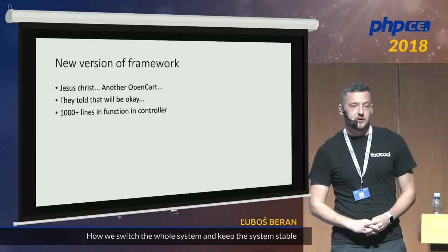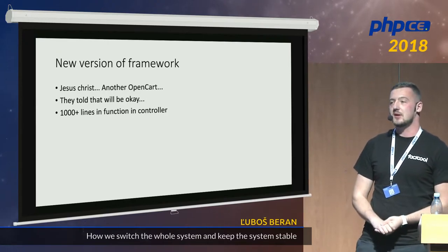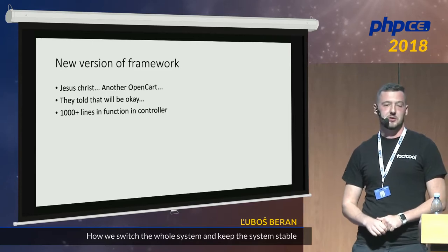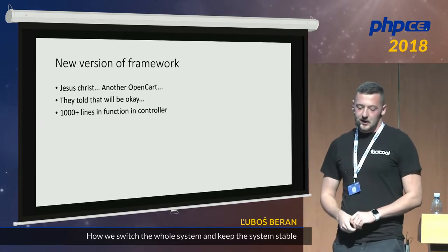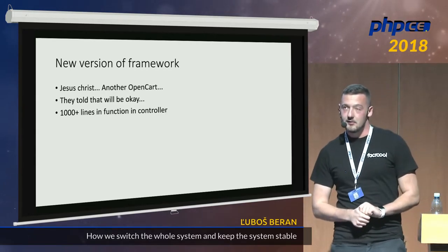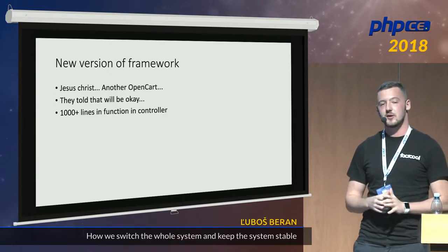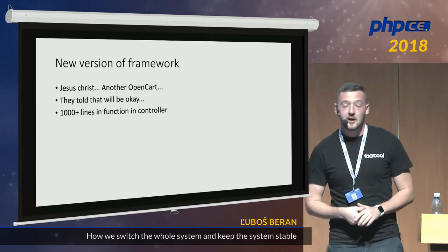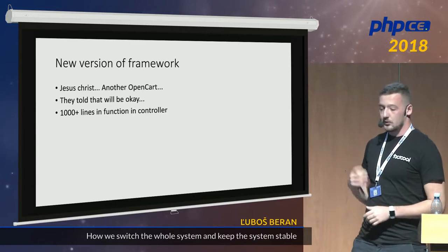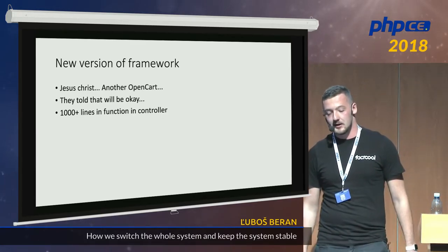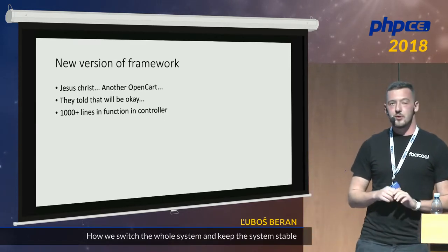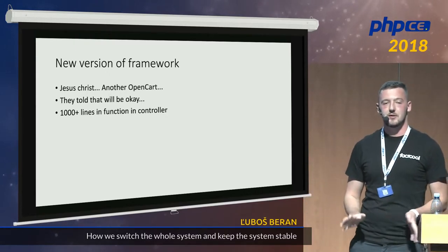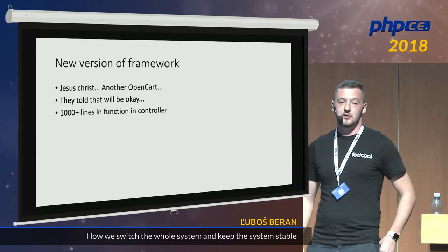Try to imagine that you have a class, something like catalog, and there is a function called index. This function has more than 1,000 lines, which is pretty scary. The whole OpenCart was written like this. But they said OpenCart version 2.17 is brand new and everything will be okay. It was not. It was a lie.